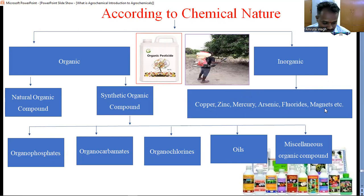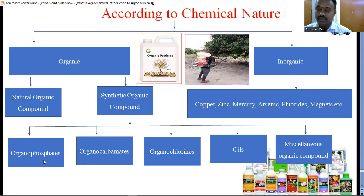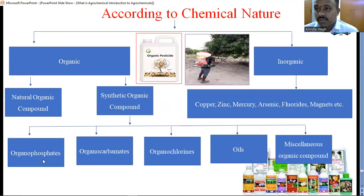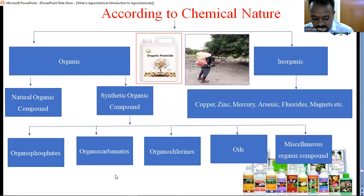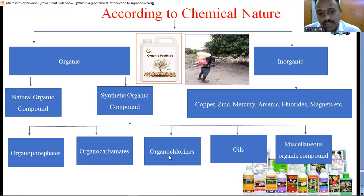Synthetic organic compounds and natural organic compounds. First we have organophosphates — these are derivatives of dimethyl and diethyl of phosphoric acid, thiophosphoric acid. Example of organophosphates: parathion, phorate, etc. Organocarbamates are derivatives of carbamic acid and contain functional ability to enhance the nutrient ability of the crop. Organochlorines have chlorine content. Oils include petroleum oils consisting of aliphatic hydrocarbons such as saturated paraffins, aromatic compounds, olefinic compounds, and related hydrocarbons. Miscellaneous organic compounds are those not included in organophosphates, organocarbamates, organochlorides, or oils.